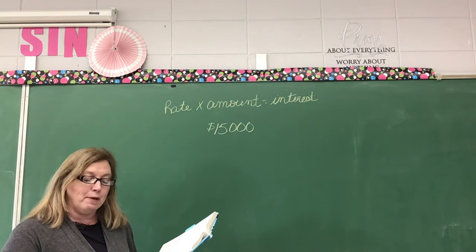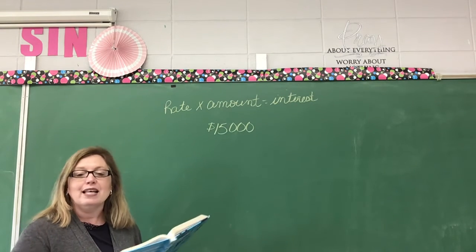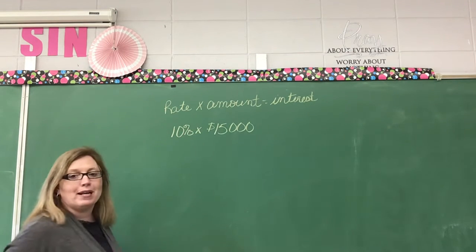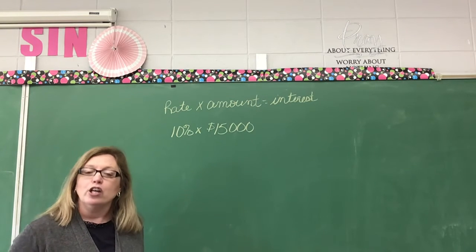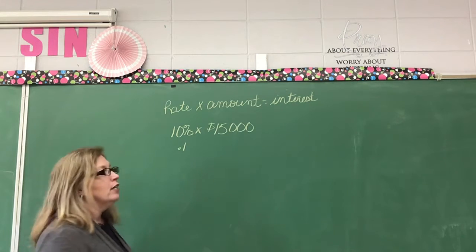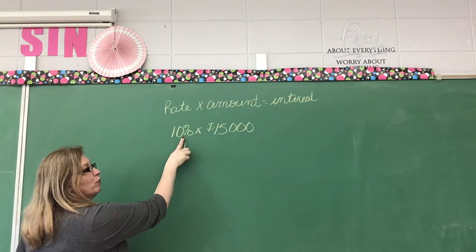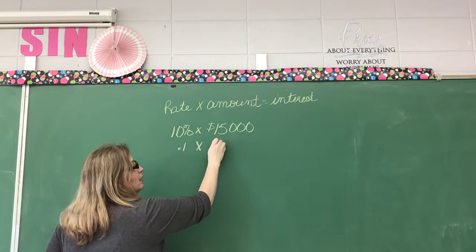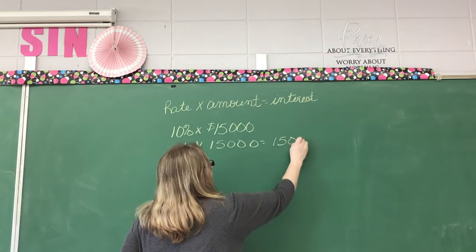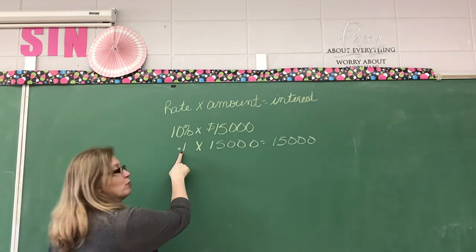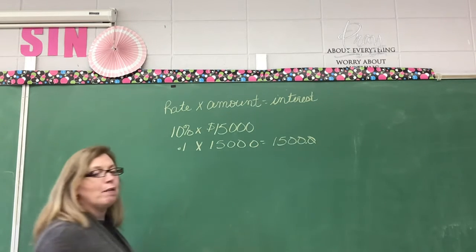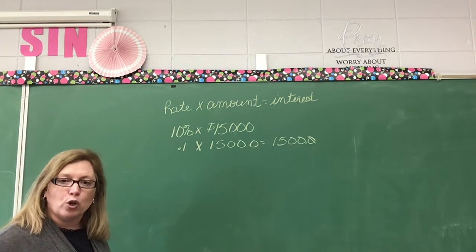It says he put it in the bank at 10% simple interest. That means they're going to pay him a rate of 10%. Now, I can't multiply by a percent, so I have to change that to a decimal. The decimal is 0.1 — technically 0.10, but I don't need that zero. To go from a percent to a decimal, you drop the percent sign and move your decimal point two places. So I have 0.1 times 15,000. When I multiply that out, I get 15,000 because 1 times 15,000 is 15,000, but I have to move my decimal point one place. So how much did he earn? $1,500.